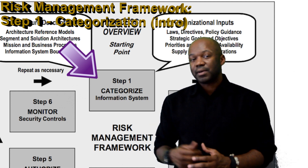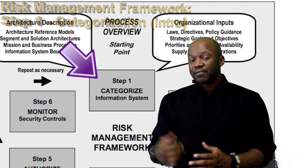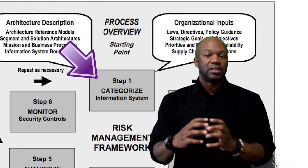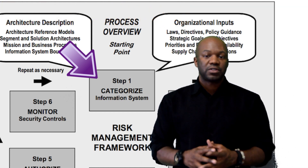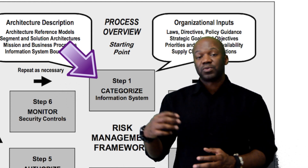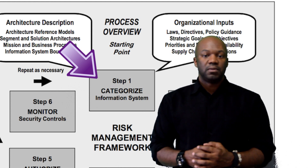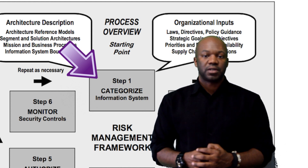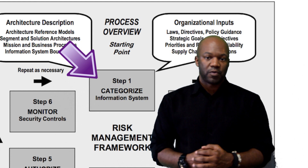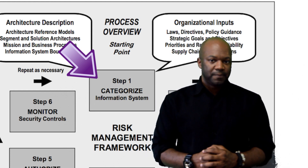We're not going to be talking about national security systems — we'll save that for another video. We're going to talk about a normal federal system that's using Risk Management Framework. That means we're not going to be using CNSS-1253 for national security systems. We're just going to stick with normal Risk Management Framework. This is all FIPS-199 stuff.